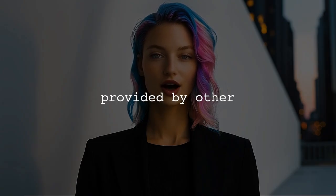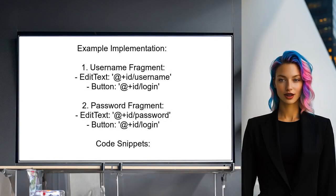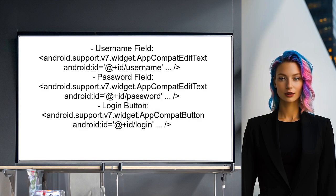Now let's look at answers provided by other users. One user suggests that the correct resource name for your EditText should simply be the name of the field, like 'edit_text_login'. They explain that the Android resource name is either the file name without the extension or the value of the Android name attribute in the XML element. They also share a unique case where they use two fragments for a sign-in process: the first fragment collects the username and the second collects the password, with XML code provided for the EditText fields and buttons used in their implementation.